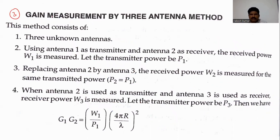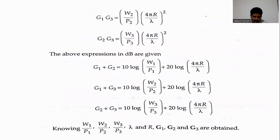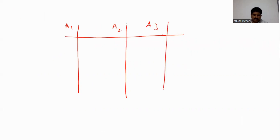The third method is gain measurement with the three-antenna method. In this method, I am going to take three antennas: A1, A2, and A3.